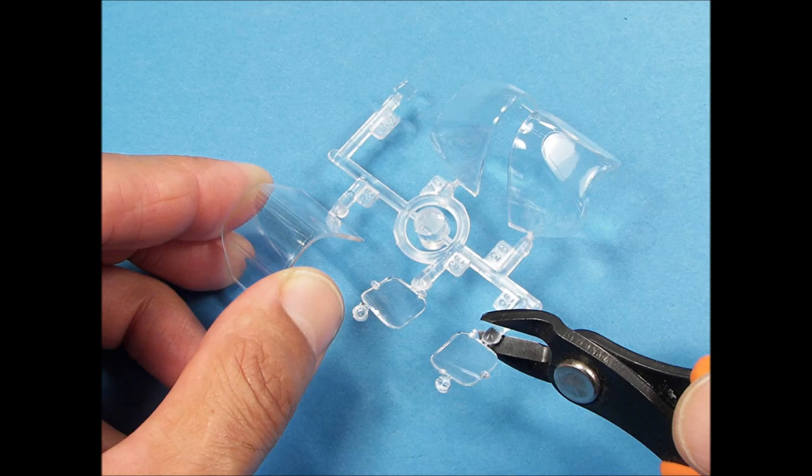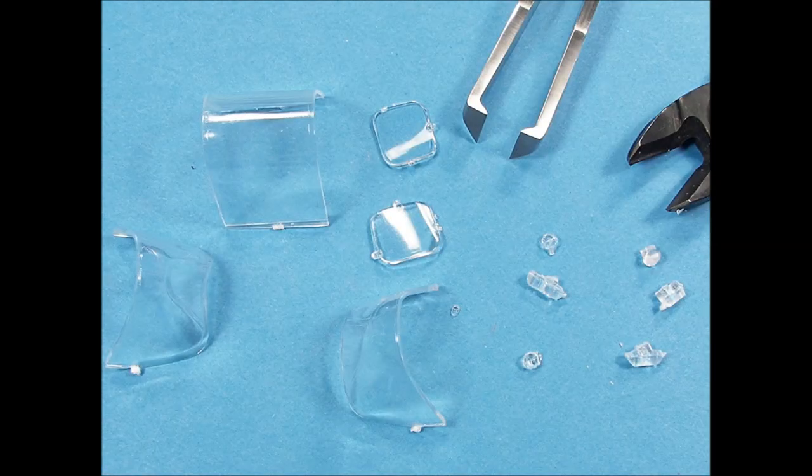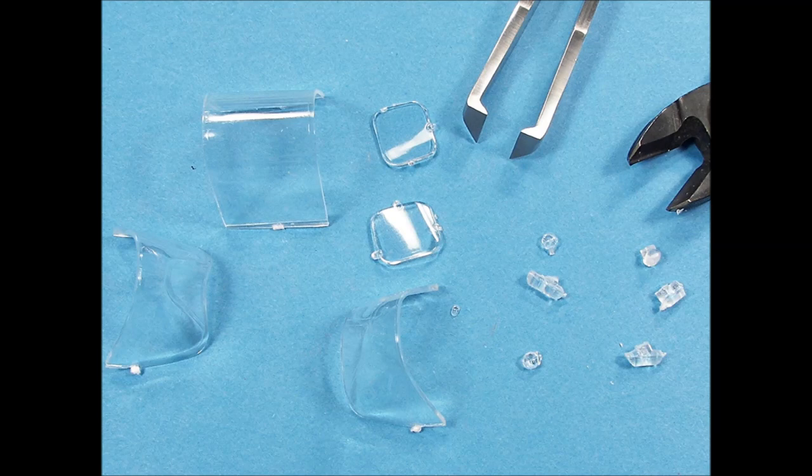Clear plastic can be somewhat brittle, so it's best to cut them off their trees, leaving a small amount of the stub on the part. Once all the clear parts are cut off their trees, carefully snip off the remaining stubs.